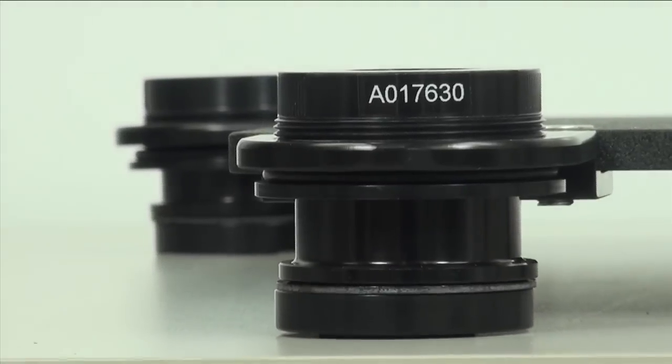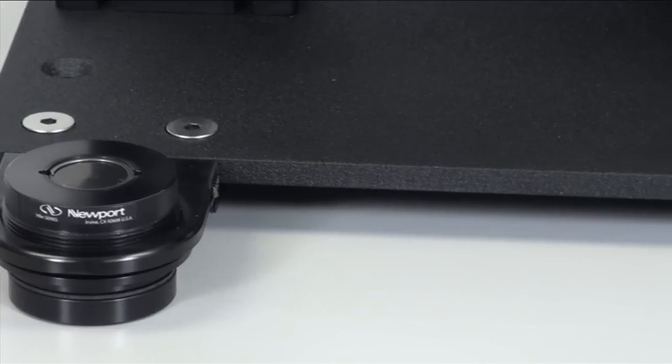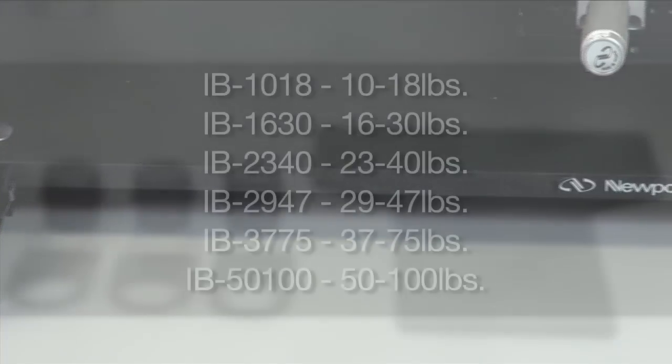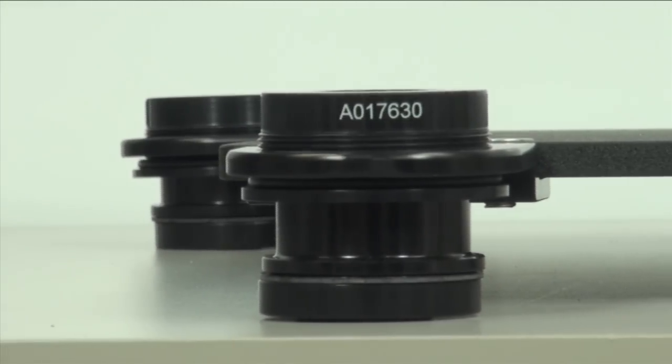At the heart of Newport's VIVE are the IB isolator bearings, which are available in discrete payload ranges as identified by their part number. For very light instruments, model IB-1018 isolates total payloads from 10 pounds to 18 pounds per bearing. And for heavy instruments, IB-50100 isolates total payloads from 50 pounds to 100 pounds per bearing.